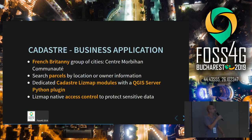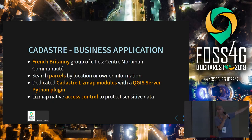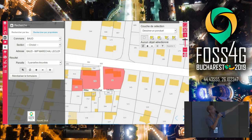One more professional use case is the Cadastre in France — a French Brittany group of cities called Centre Mont-Billon Communauté. They need to search parcels based on owners, position, the town, and the section of the cities. They use a dedicated Cadastre LizMap module and native access control to protect sensitive data depending on the logged user. You can search by location or by tenant or owner, zoom in, select parcels, export the selection, and use QGIS Composer Atlas to export a PDF.